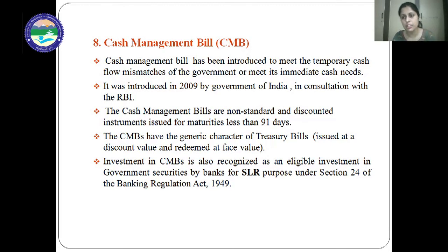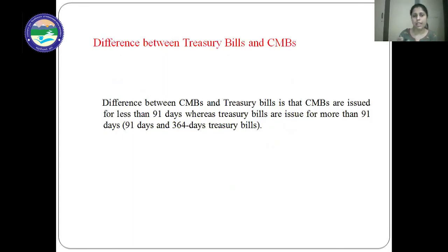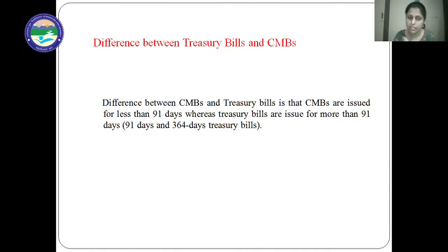Like treasury bills, cash management bills are also eligible for SLR purpose. The difference between cash management bills and treasury bills is that cash management bills are issued for less than 91 days, whereas treasury bills include 91-day, 182-day, and 364-day variants. So the only difference is that cash management bills are issued for less than 91 days only, whereas treasury bills are issued for 91 days or more.